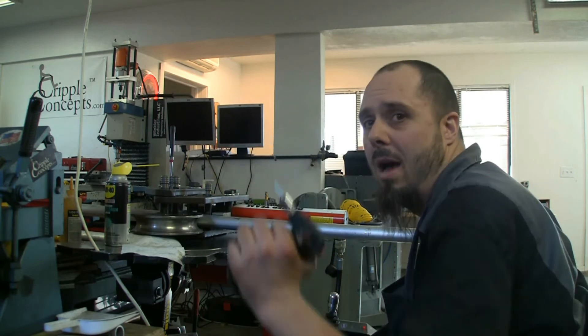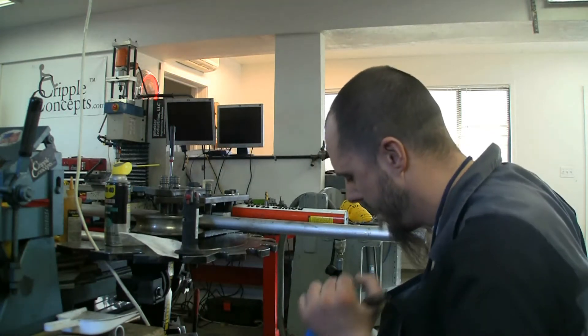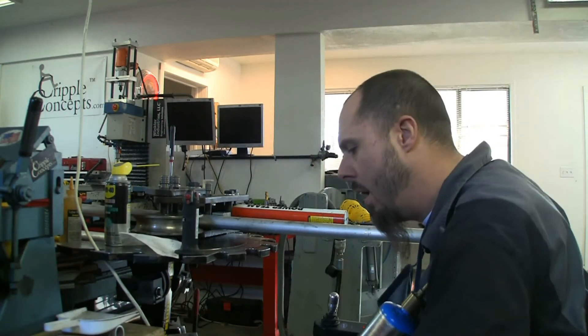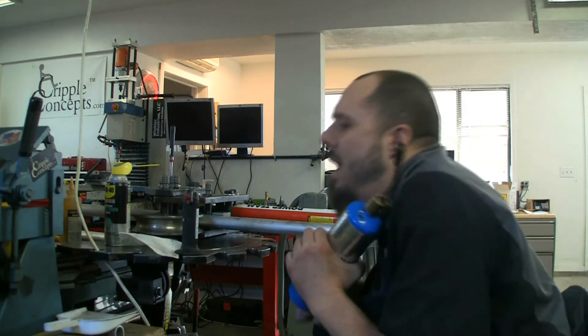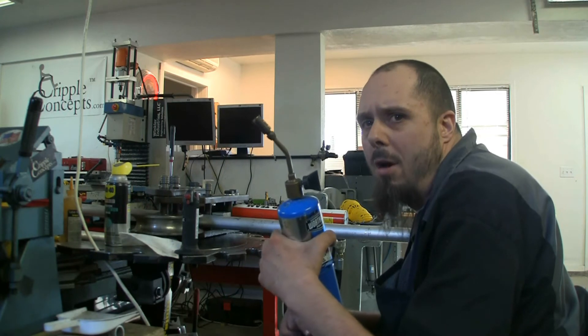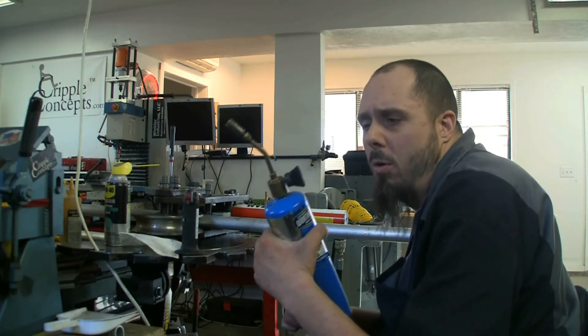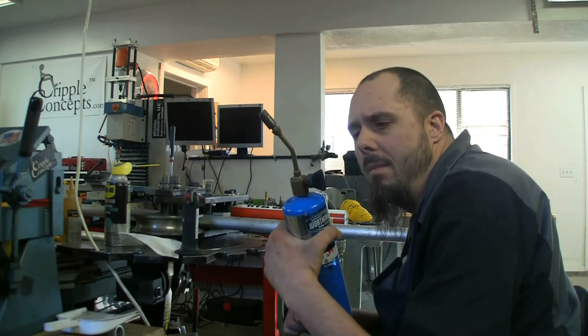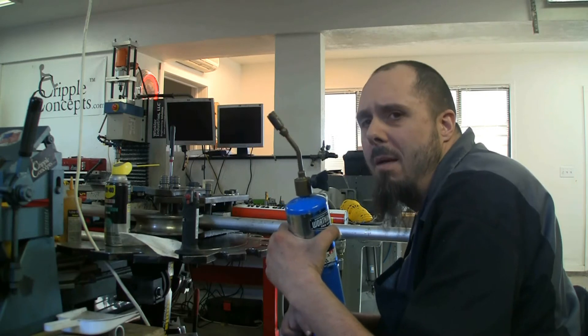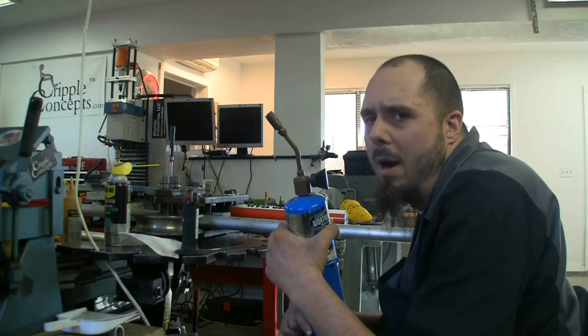Set that to the side for right now and grab hold the propane torch. Now the propane torch had a just a regular knurled brass knob on it that didn't work for me with my teeth. So I drew up a quick little wingnut looking adapter here and printed on the 3D printer that enables me to use my teeth to turn the gas on.